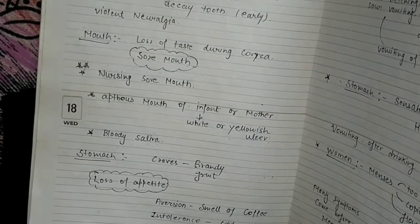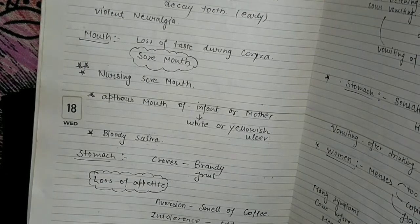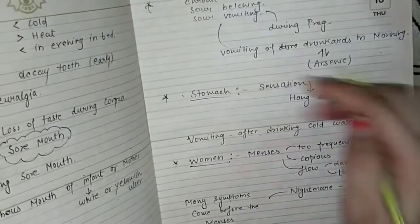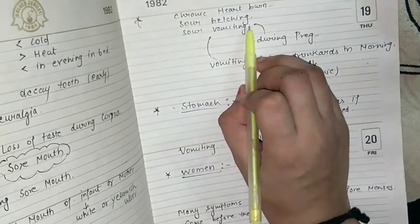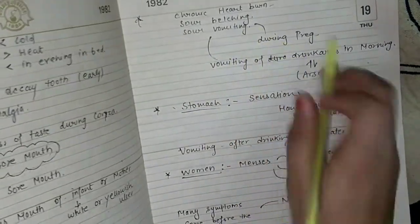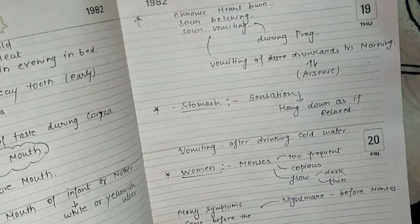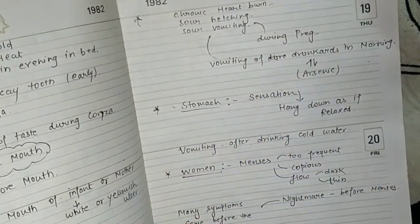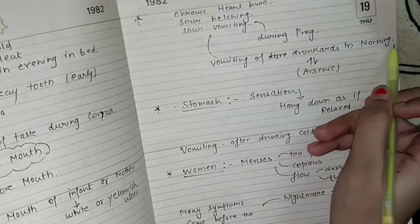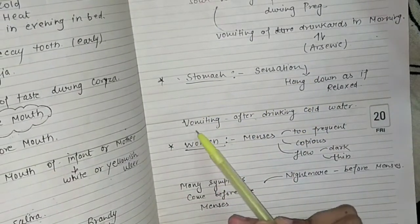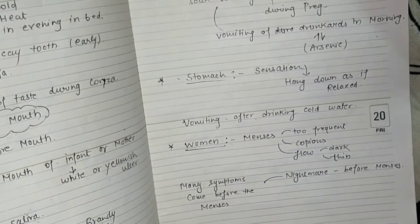In the stomach: craving for brandy and fruit, loss of appetite, aversion to the smell of coffee, intolerance of cold water because if cold water is drunk the stomach becomes cold. Chronic heartburn, sour belching, sour vomiting during pregnancy. Sensation of the stomach hanging down as if relaxed. Vomiting after drinking cold water — compare with Arsenic.